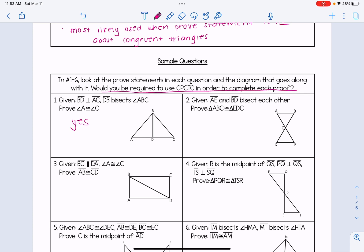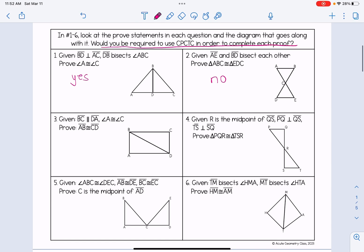Number two is about congruent triangles. So no, CPCTC would not be required. Number three, the proof statement is about congruent segments. So yes, CPCTC. And number four, it's about congruent triangles. So no.